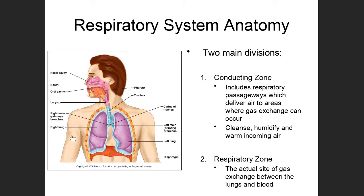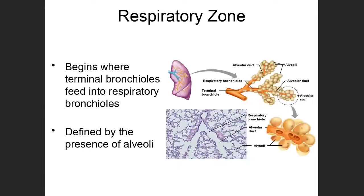The other division we have in this system is what are known as respiratory zone structures. These are all microscopic, so when you're looking at a model or a diagram of this system, these are things you're not able to see with the naked eye — we actually have to look at them from a microscopic perspective. Respiratory zone structures are the structures where we've actually got gas exchange between the lungs and the blood.